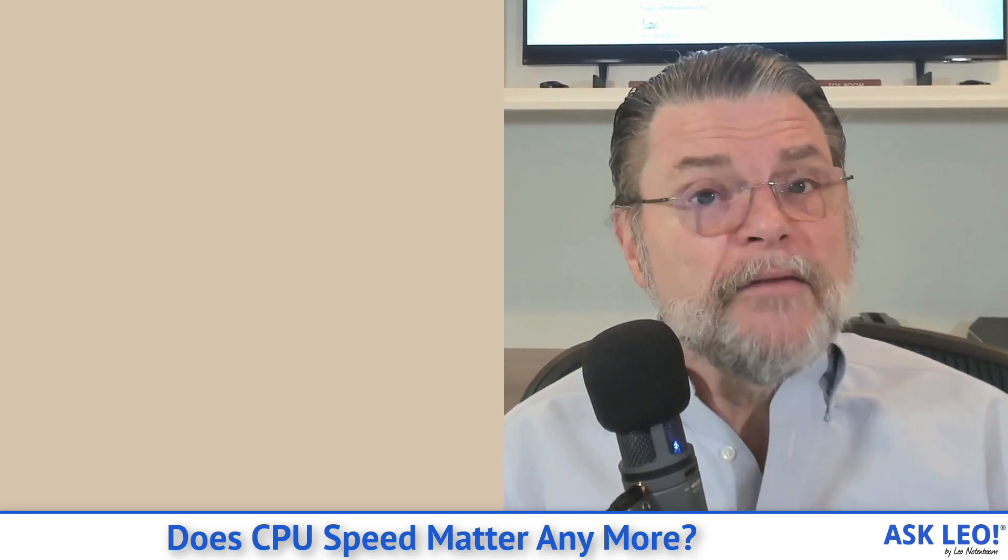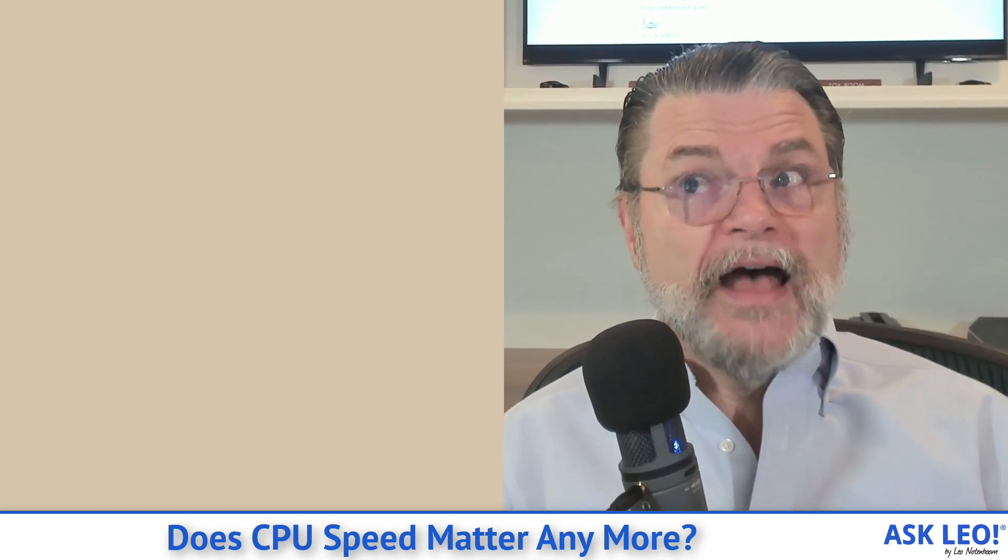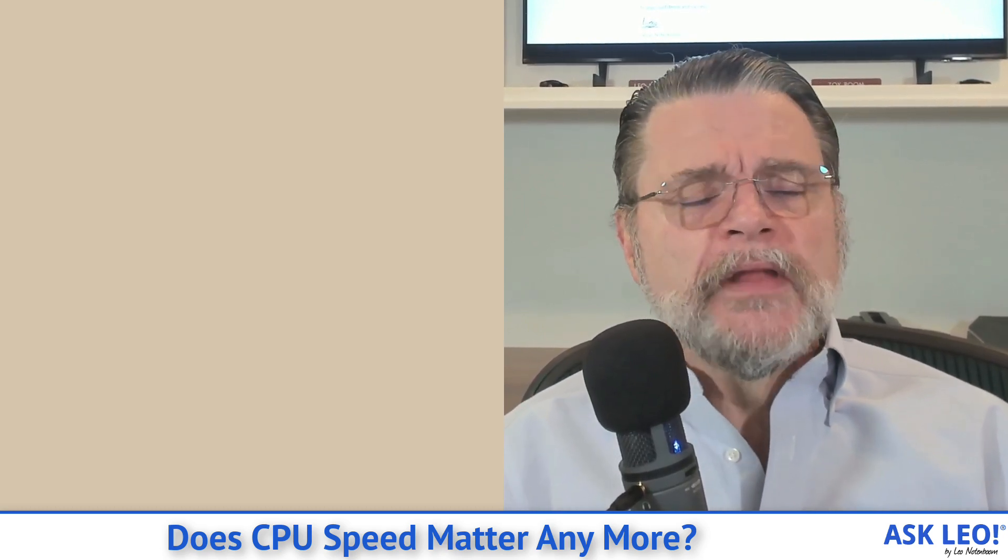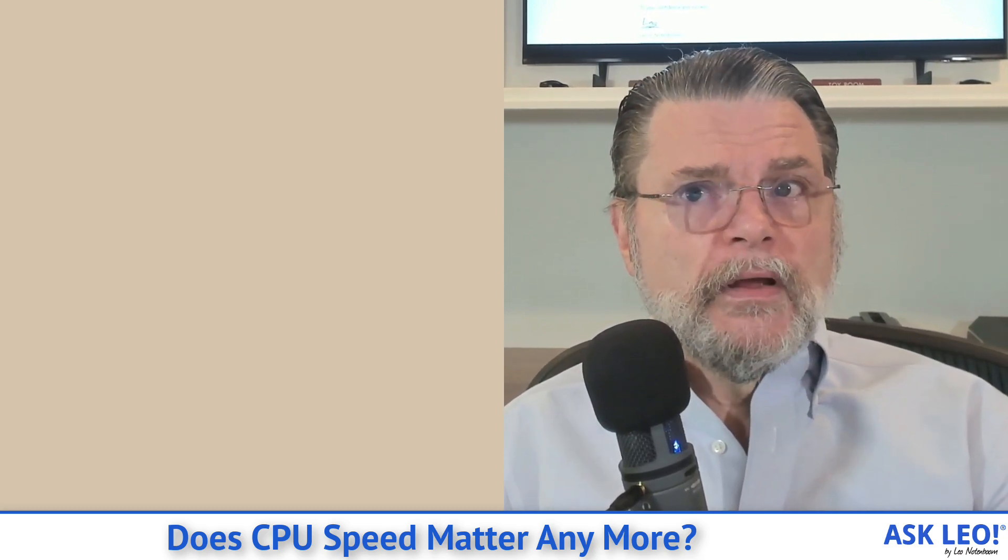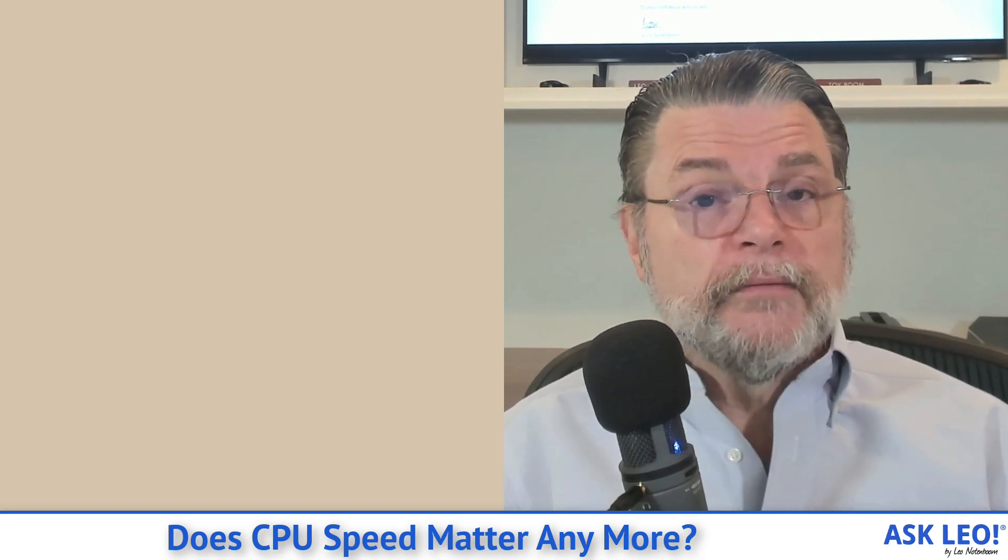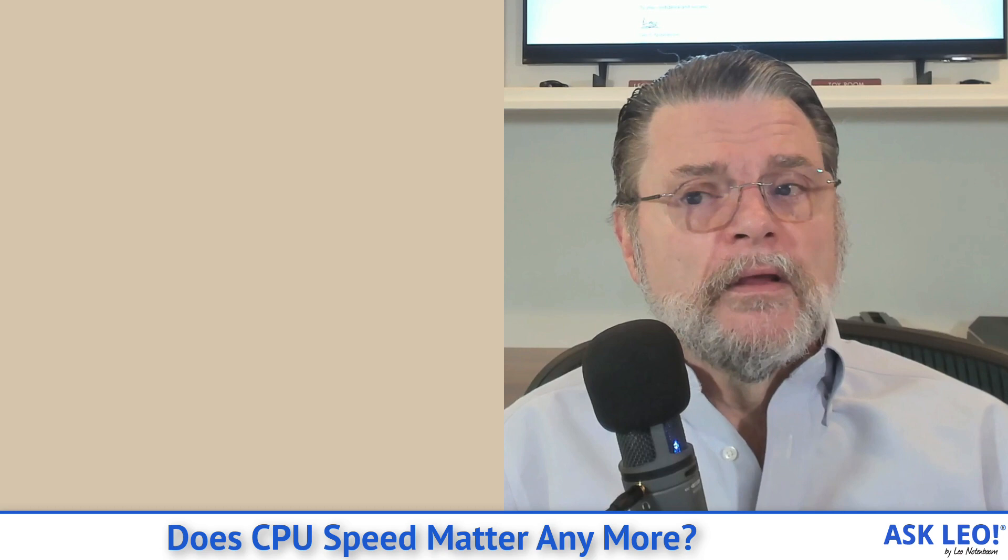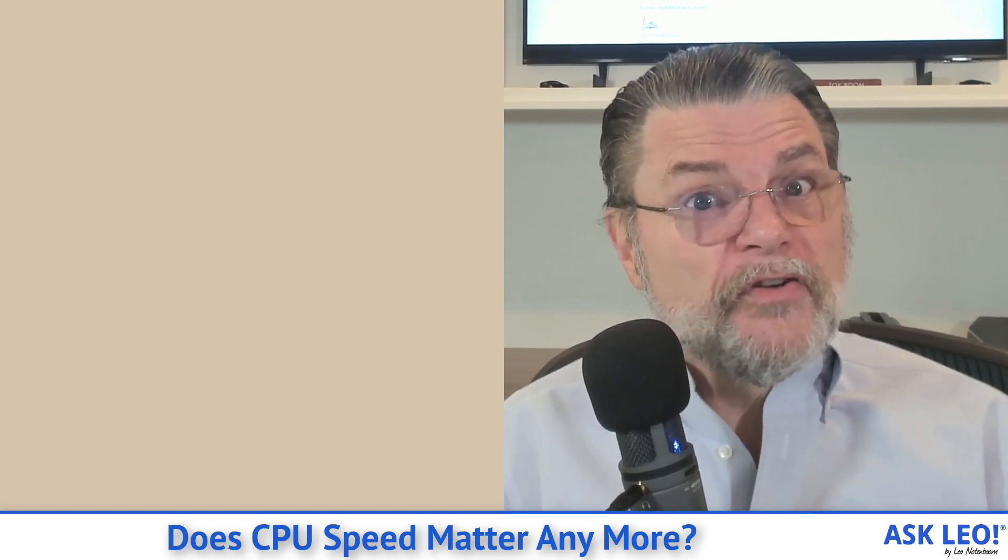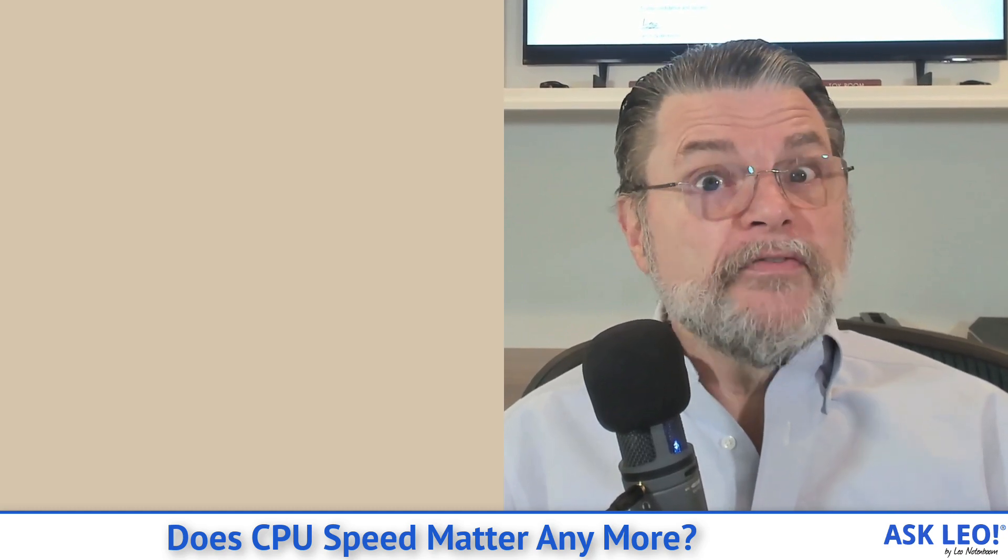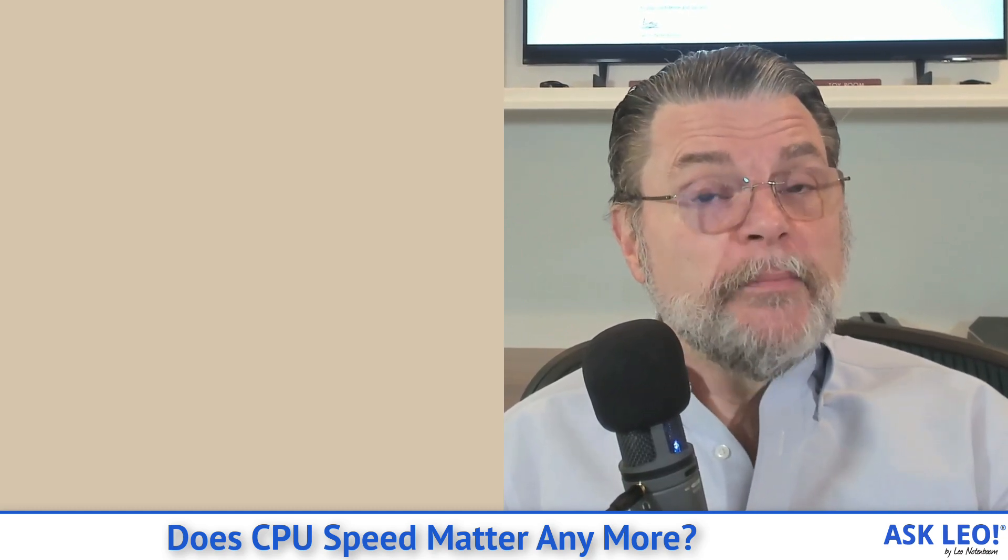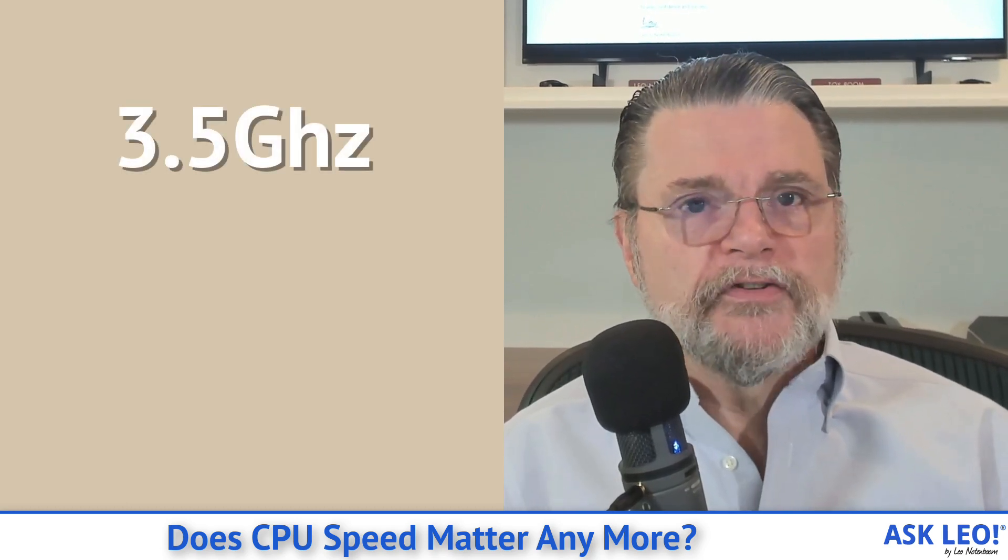Now, CPU speed can be very important. One of the reasons this machine is as powerful as it is, is because when I chose it, I realized that what I would be doing involved video editing. Well, video editing is a very CPU intensive process, which means that I would really benefit from getting the fastest CPU that my budget would allow, hence 3.5 megahertz.